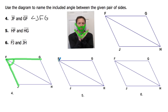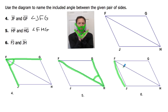For number 5, side HF goes along here and side HG is this piece. So the included angle right here is angle FHG — that's one of the two ways you can name it. For number 6, you've got side FJ here and side JH going along the bottom. The included angle with three letters would be angle FJH. You could reverse that and call it angle HJF and that's okay — either one is fine.